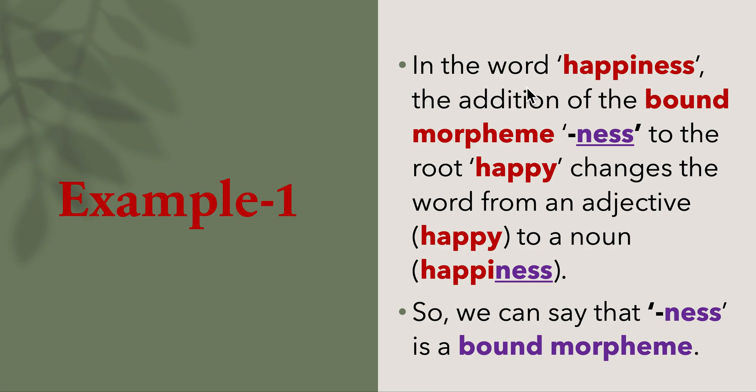Example one: In the word 'happiness', the addition of the bound morpheme '-ness' to the root 'happy' changes the word from an adjective (happy) to a noun (happiness). So we can say that '-ness' is a bound morpheme.